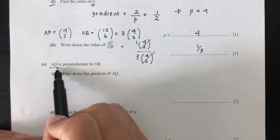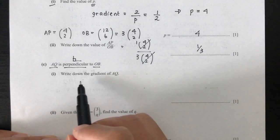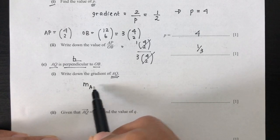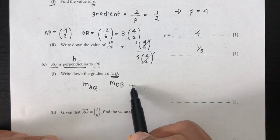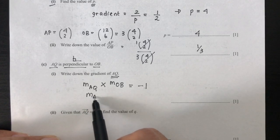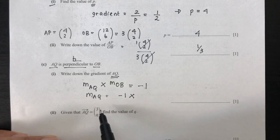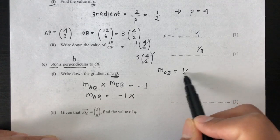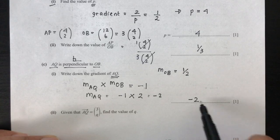So now for part C, we have AQ is perpendicular to OB, write down the gradient of AQ. So pretty easy. If my gradient of AQ is perpendicular to my gradient of OB, both gradients have to be equal to minus 1. So gradient of AQ times gradient of OB is equal to minus 1. So what is M of OB, which is the gradient of OB, has been found to be half. That will be equal to times 2. That should be minus 2.